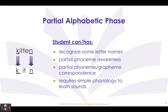A child in the pre-alphabetic phase is usually around three to four years of age. A child in the partial alphabetic phase can recognize some letter names and has partial phoneme awareness. A child in this phase can sometimes identify sounds within a word, usually the initial or first sound and final or last sound. This means that when spelling, a child may write the letters K and R to represent the word car. In this phase, a child cannot decode or read new words.